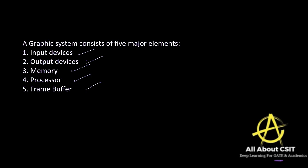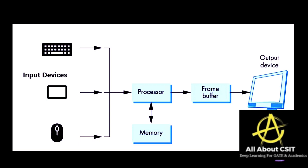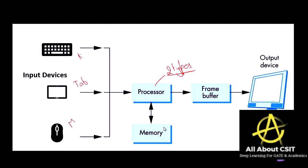In this block diagram, input devices like the mouse, keyboard, and tablet are connected to the processor. Two types of processing elements are used in the processor: one for general purpose calculations and another for supporting graphics. Similarly, two types of memory are used — one for regular data storage and another for storing graphics data.